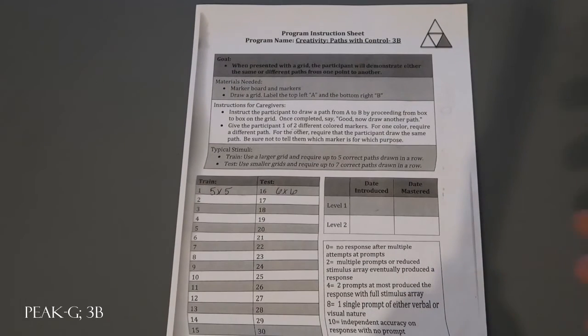And with PEAK generalization, just keep in mind again you're intermixing train and test within a block. So maybe set up your data sheets accordingly to cross out that two, four, and eight for test blocks or test trial numbers, so that you kind of keep track that those are ones that you're not prompting or giving any feedback during.